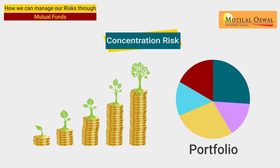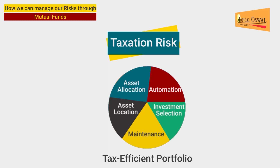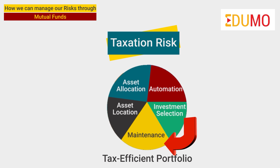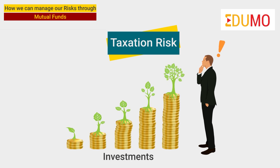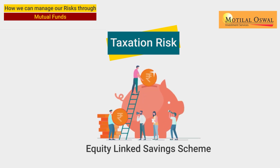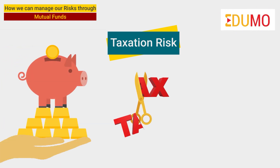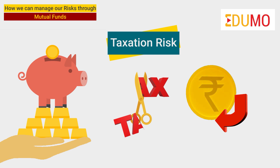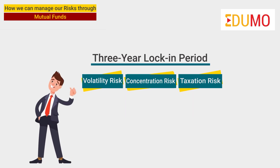The third type of risk mutual funds can help us reduce is the taxation risk. A tax-efficient portfolio is a portfolio that can help us achieve the best returns. Therefore, as informed investors, it is our responsibility to choose investments which pose the least possible tax burden on our portfolio. Thankfully, with mutual funds like the Equity Linked Savings Scheme, or ELSS, we can now achieve tax efficiency with long-term wealth creation. These schemes offer tax exemptions for the amount deposited and for any returns earned as well. Also, the three-year lock-in period given by these schemes helps investors build the habit of long-term investing too.